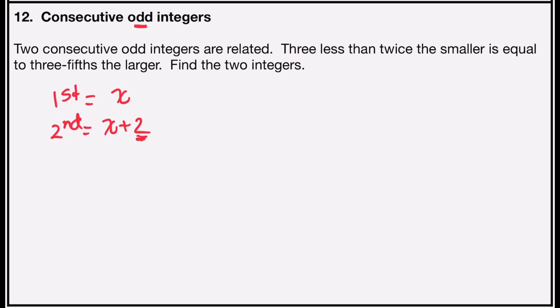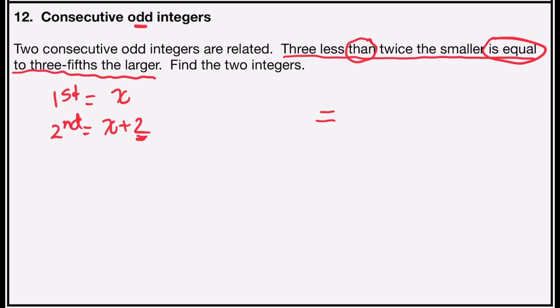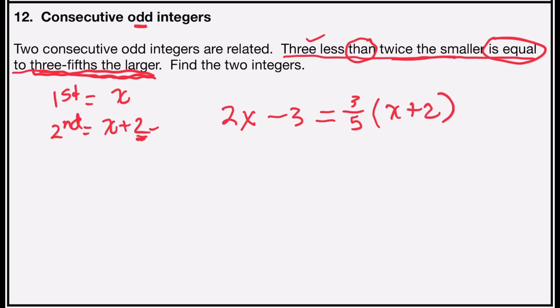Now I'm going to use translation to write my equation. It says three less than twice the smaller is equal to three-fifths the larger. Here's my 'is equal to' — that's my equal sign. 'Three less than' — here's the word 'than,' so I'm going to reverse the three; it's written first in words but second in symbols. Twice the smaller will be 2x, so the left side expression will be 2x minus three. The right side is three-fifths times the larger, which is x plus two. So my equation says 2x minus three equals three-fifths times x plus two.